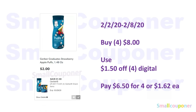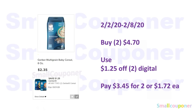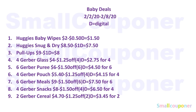The Gerber snacks are $2.00 each — buy four for $8.00, use the $1.50 off 4 digital, and pay $6.50 for four or $1.62 each. The Gerber multigrain cereal is $2.35 each — buy two for $4.70, use the $1.25 off 2 digital, and pay $3.45 for two or $1.72 each. Those are all the baby deals.